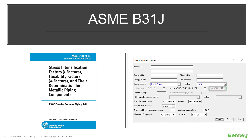In addition to all the B31 codes, AutoPipe also includes the B31J standard, which aims to provide a standardized method to develop the SIFs, or stress intensification factors, and flexibility factors determination for metallic piping components, and sustained stress factors used in all of the B31 piping analysis.